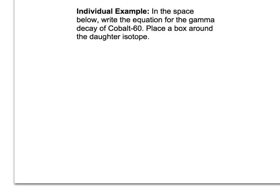Our individual example for learning target 1.13 asks us to write the equation for the gamma decay of Cobalt-60, placing the box around the daughter isotope. So pause the video here, and resume when you want to check your answer.